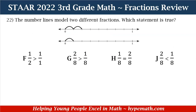Let's go to question number 22. The number lines model 2 different fractions. Which statement is true? We have two number lines. The top one has two hops and the bottom one has one hop. Let's count the number of lines between 0 and 1: 1, 2, 3, 4, 5, 6, 7, 8. It takes 8 total hops to get from 0 to 1. Now let's look at our answer choices: F: 1 half is greater than 1 over 1. G: 2 eighths is greater than 1 eighth. H: 1 eighth is equal to 2 eighths. And J: 2 eighths is less than 1 eighth.